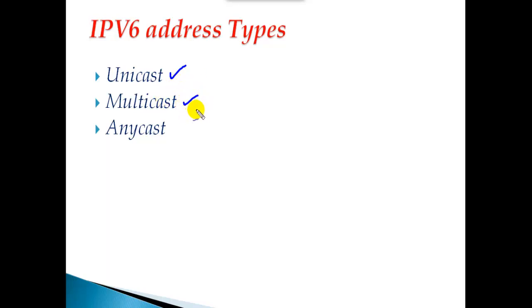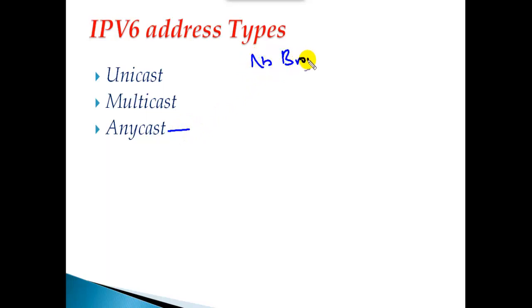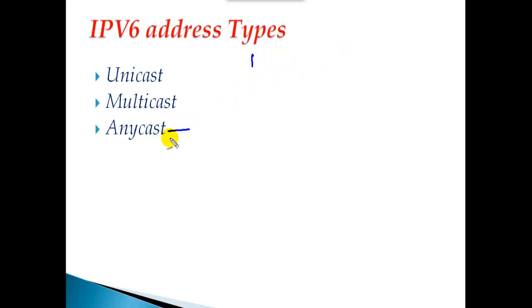A multicast address is more like a class D address, used for multicasting services. There is no concept of broadcast in IPv6 — broadcast has been removed. Instead, we have something called anycast, which is totally different from broadcast or multicast. We'll see that in detail in our next topics.